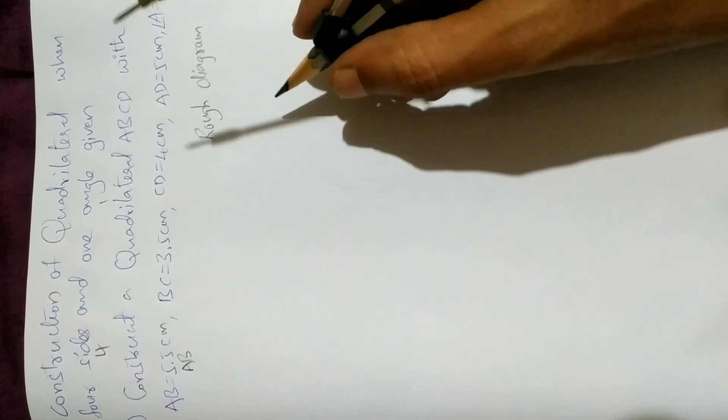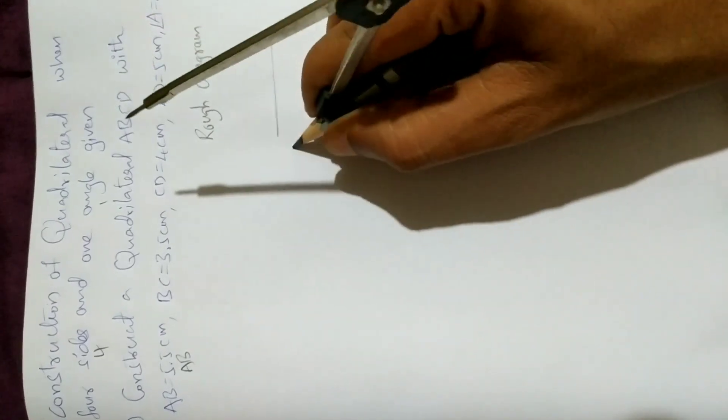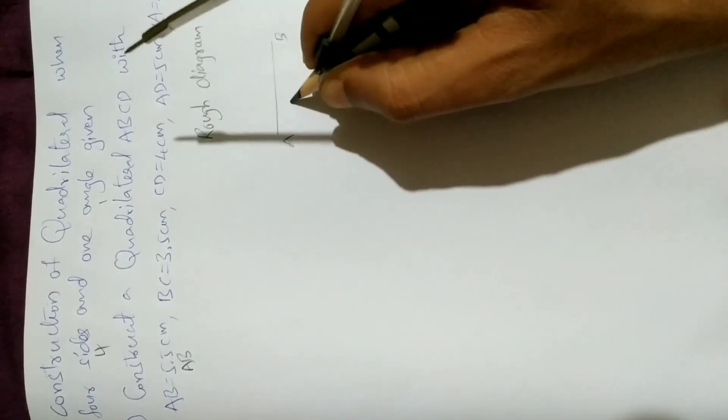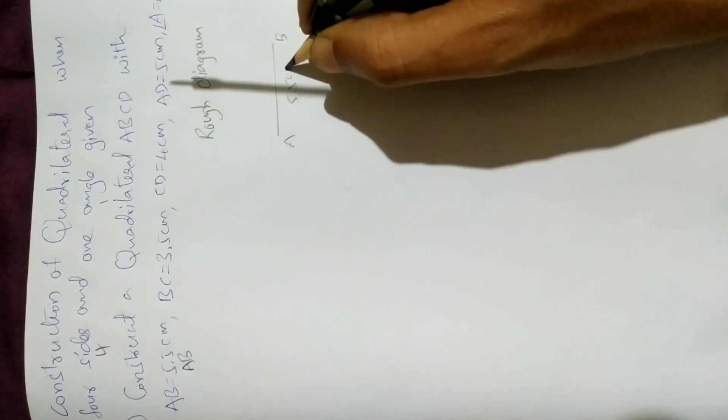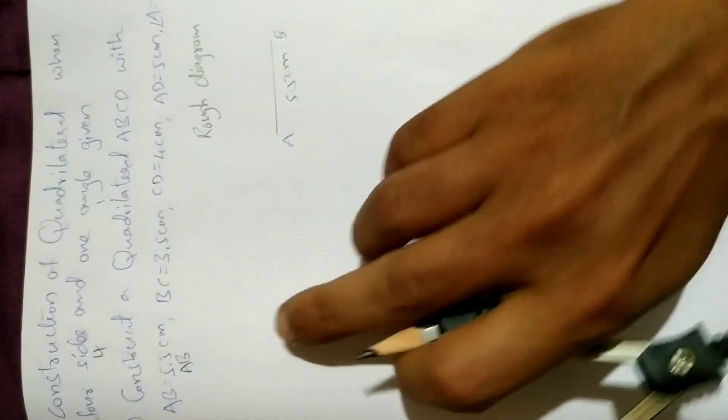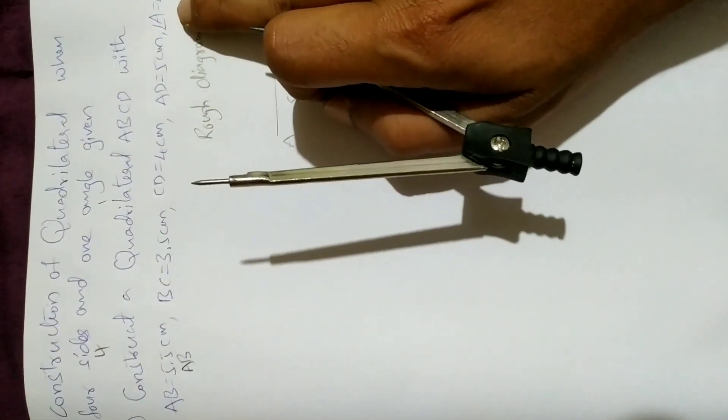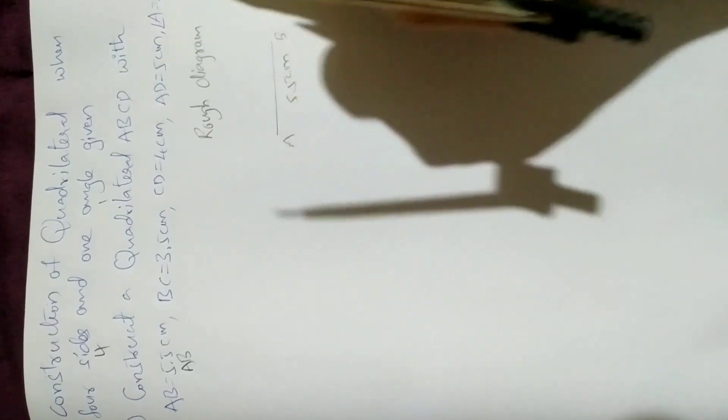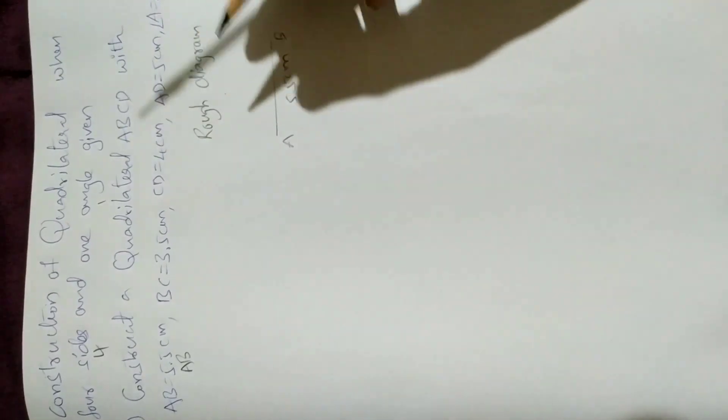Next, we have the angle. Angle is 45 degrees from point A. By using protractor, mark 45 degrees angle and draw a line segment through it. So this is 45 degrees.